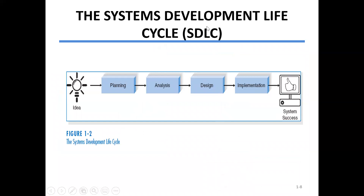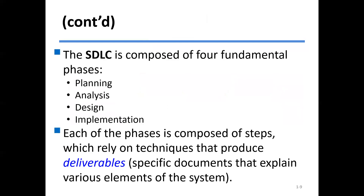The system development life cycle has four stages. The first is planning, where we define the main objectives and conduct feasibility studies to assess the cost-benefit of the system. Then comes analysis, where requirements are gathered. Next is design, where algorithms are designed to transform inputs to outputs. Finally, implementation is where the system is developed using a programming language.